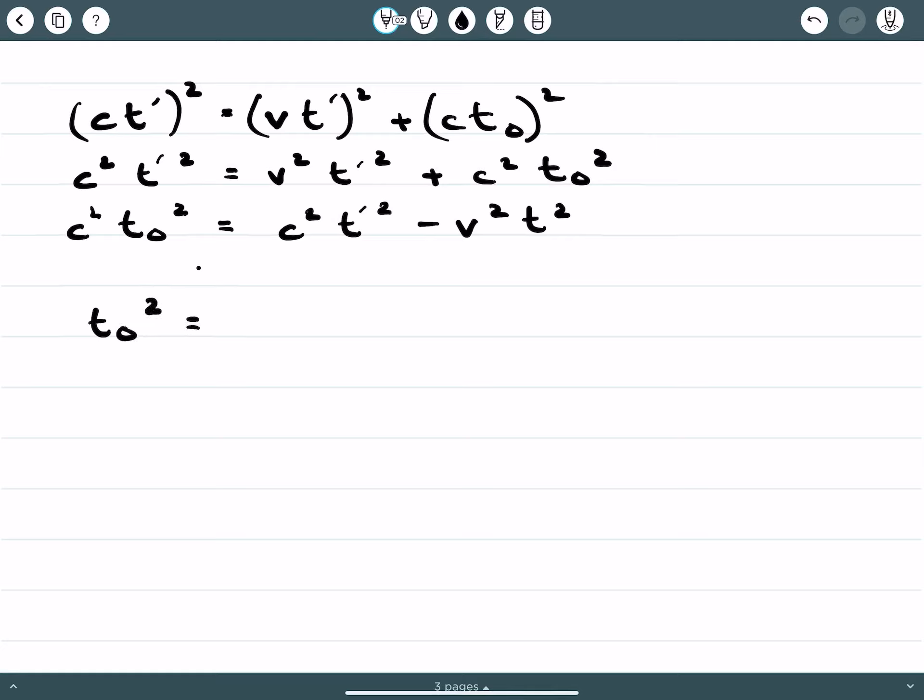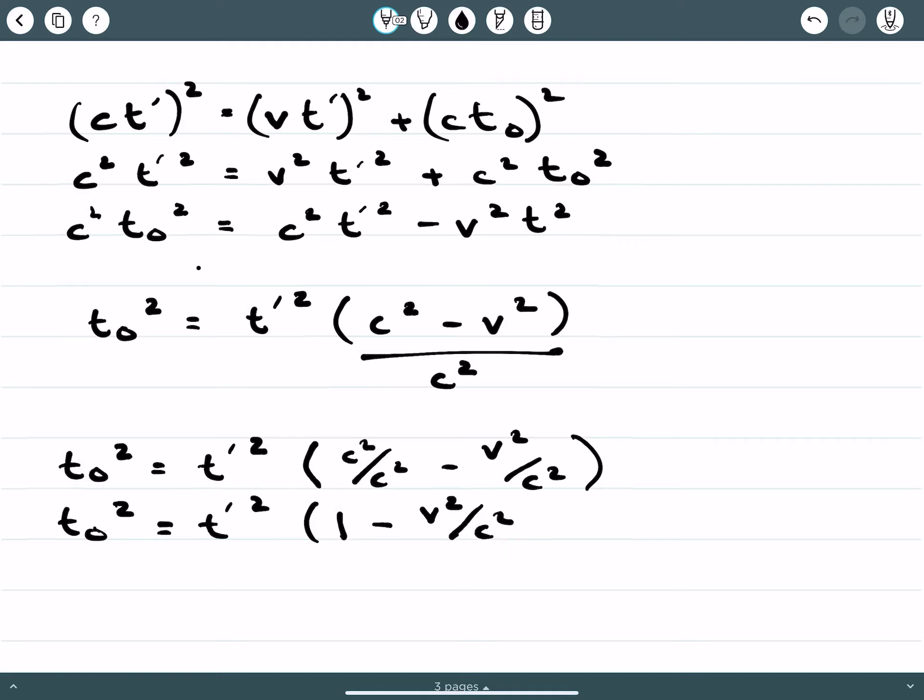And then we're going to put it in terms of proper time. Let's divide everything by, well, we can factor out proper time here, and we can have and we will see that the Lorentz factor is starting to reveal itself, squaring both sides.